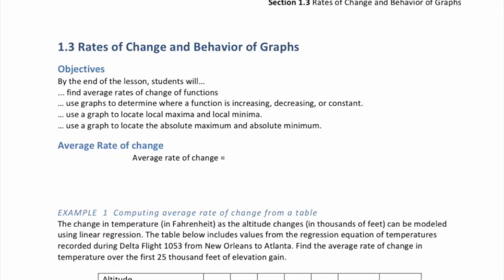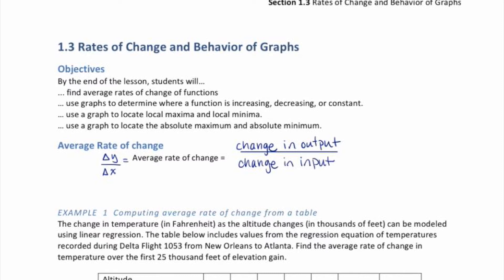Now let's start by defining the average rate of change. Symbolically, this looks like the Greek symbol delta. So that's change in Y over delta X, the change in X. This is the change in output — the change in the output values over the change in the input values. We can find that by subtracting two Y values and dividing that by the difference of their corresponding X values.